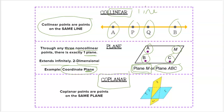Coplanar are points on the same plane. You can see, we would have points C, B, and E are coplanar because they exist on the blue plane. And then points D and A would be coplanar because they exist on the yellow plane.